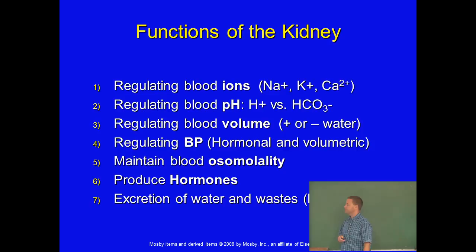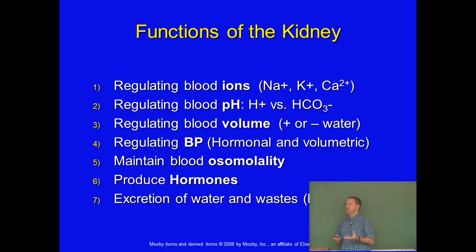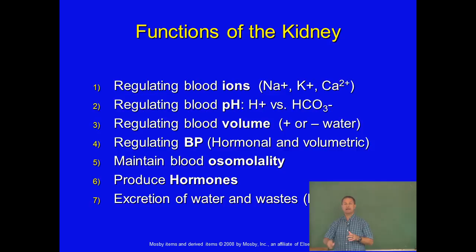Think about something acidic you might eat or drink — orange juice, lemonade, coffee, Coca-Cola — pH of about 5. If that went straight into your bloodstream unbuffered, it would kill you. But because your bloodstream can buffer it and your urinary system is good at pulling out excess hydrogen ions and putting them in the urine, your blood pH doesn't fluctuate. It keeps the blood pH very stable.